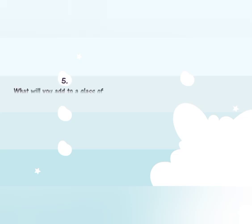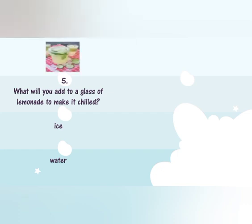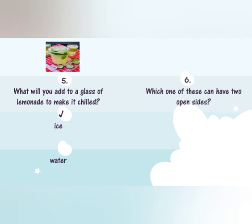Fifth number: what will you add to a glass of lemonade to make it chilled — ice or water? To make lemonade chilled, we add ice into it. So our answer is ice. Sixth number: which one of these can have two open sides — cone or cylinder? We eat ice cream in a cone; it is open from one side, so cone is not our answer. Our answer is cylinder.